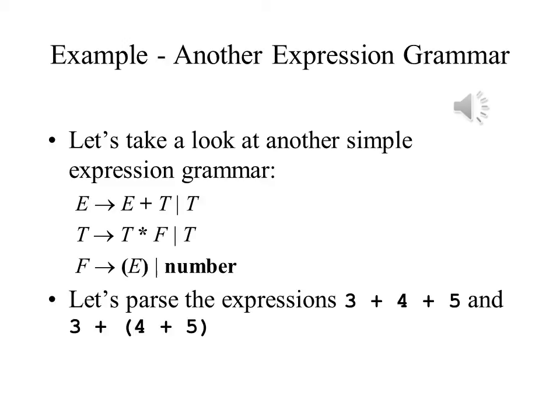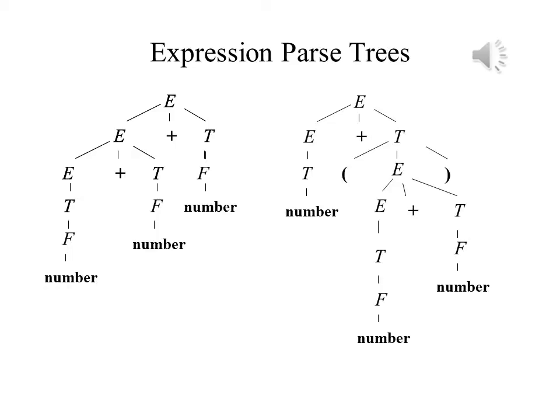Given these rules, let's parse the two expressions that you see here: 3 plus 4 plus 5, or 3 plus the sum of 4 plus 5. The presence of the parentheses changes the order in which we evaluate them, and we need a parse tree to show that. In both cases, we have the expression at the top. Expression is the start symbol in this grammar, and they both derive an expression plus a term. But what you have after that is quite different.